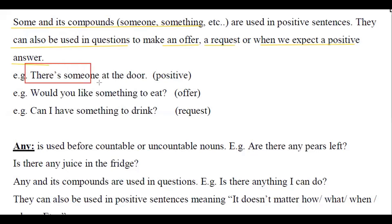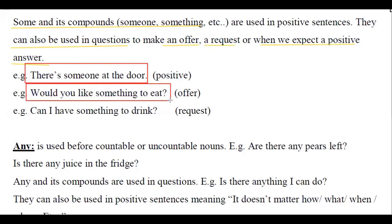For example: 'There is someone at the door' — that's a positive sentence. 'Would you like something to eat?' — that's an offer. 'Can I have something to drink?' — that's a request.